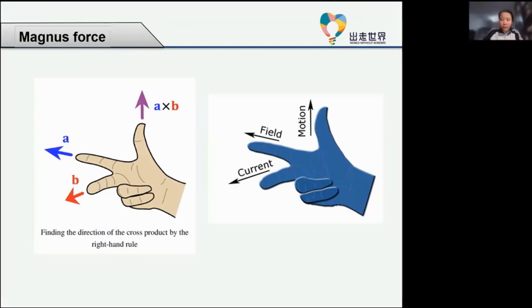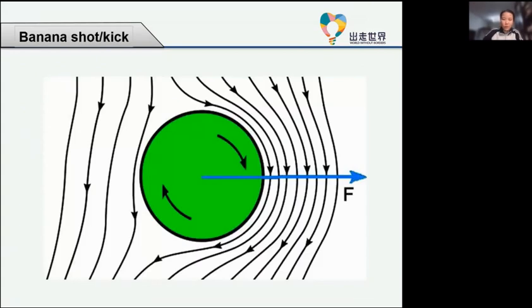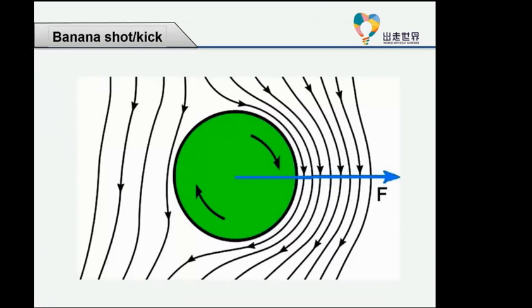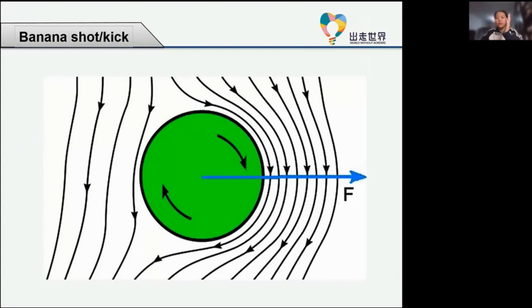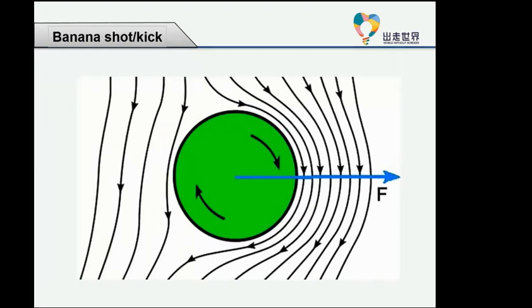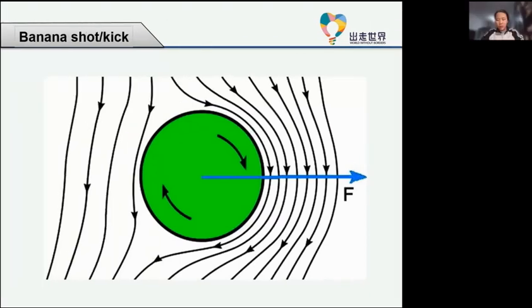It's opposite to this picture. If the trajectory tends to be right, the Magnus force needs to be right. It's opposite to this side.